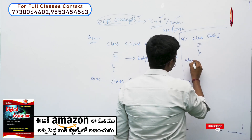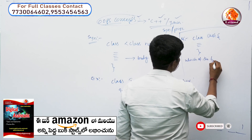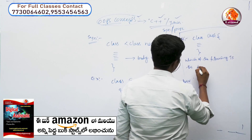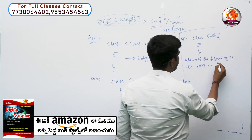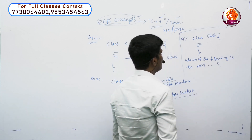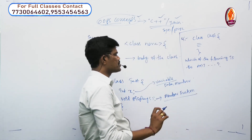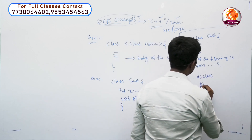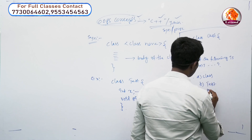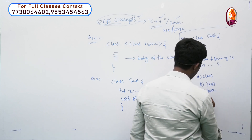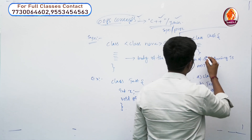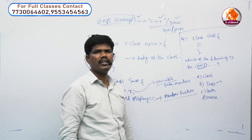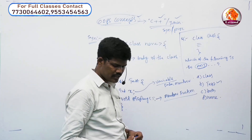Which of the following is the ADT in the given syntax? The class syntax has options: option A is class, option B is test, option C is both, option D is another option. The ADT — Abstract Data Type — we need to consider it as class. So the answer is class.